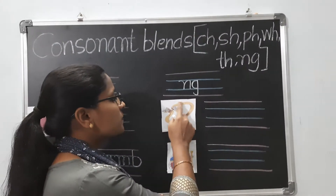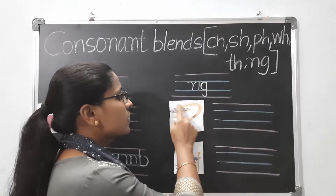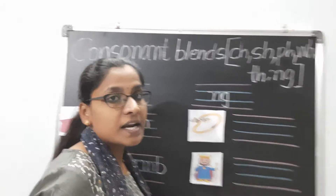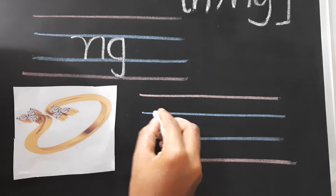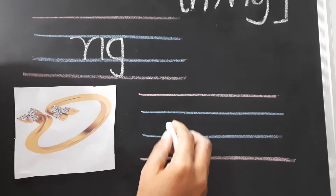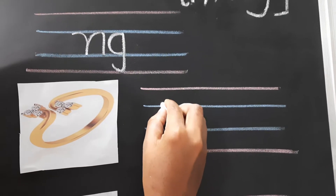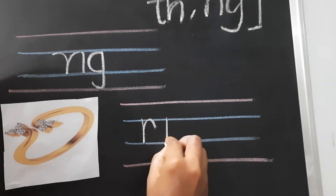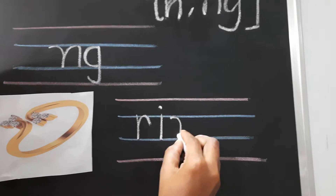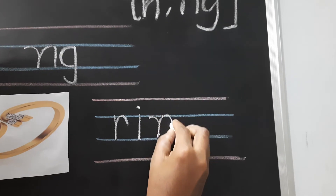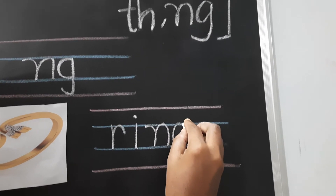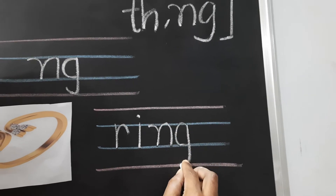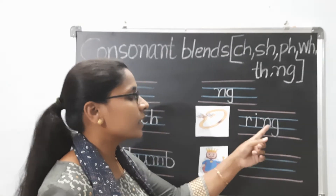So what is the first picture we have here? The first picture is ring. So it is ending with the blend NG. R-I-N-G. Ring.